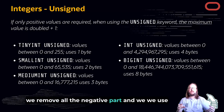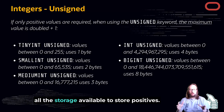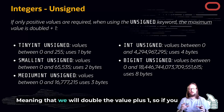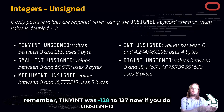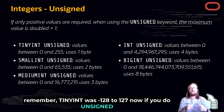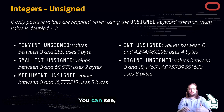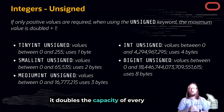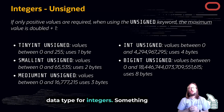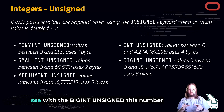When we use UNSIGNED we remove all the negative part and use all the storage available for positive values, which means we will double the value plus one. For example, TINYINT goes from minus 128 to 127, but UNSIGNED TINYINT becomes 0 to 255 — it doubles the capacity for every integer data type.